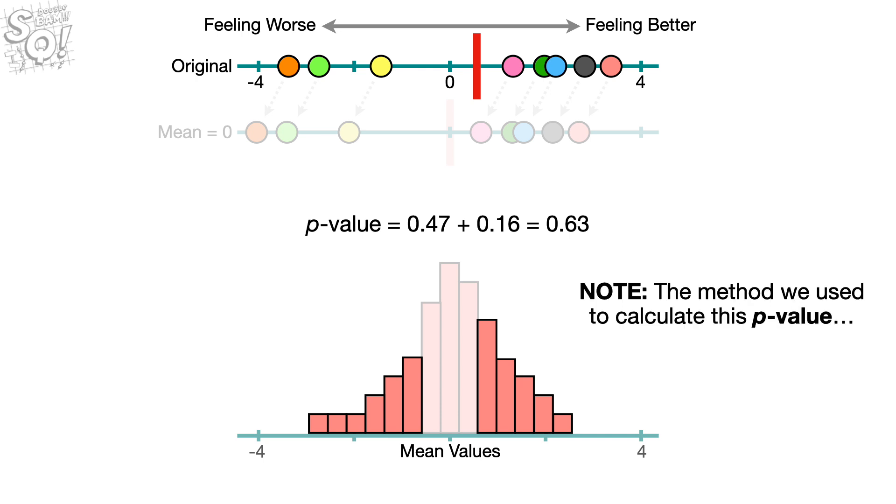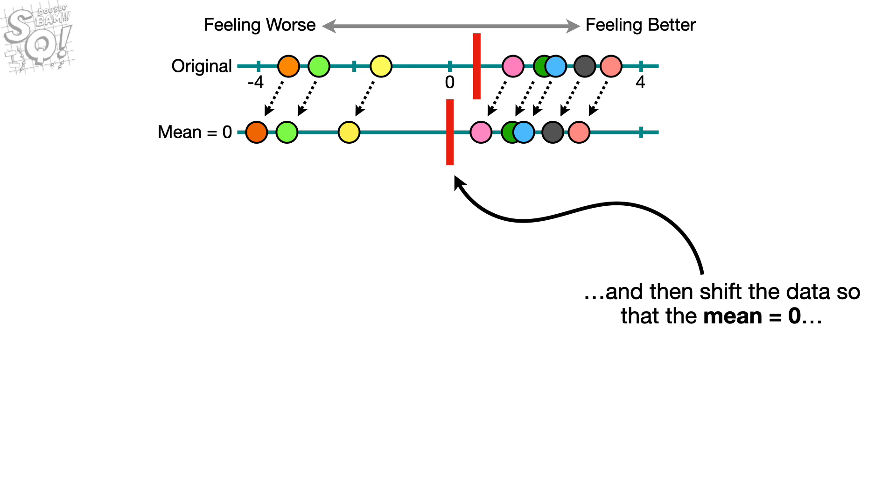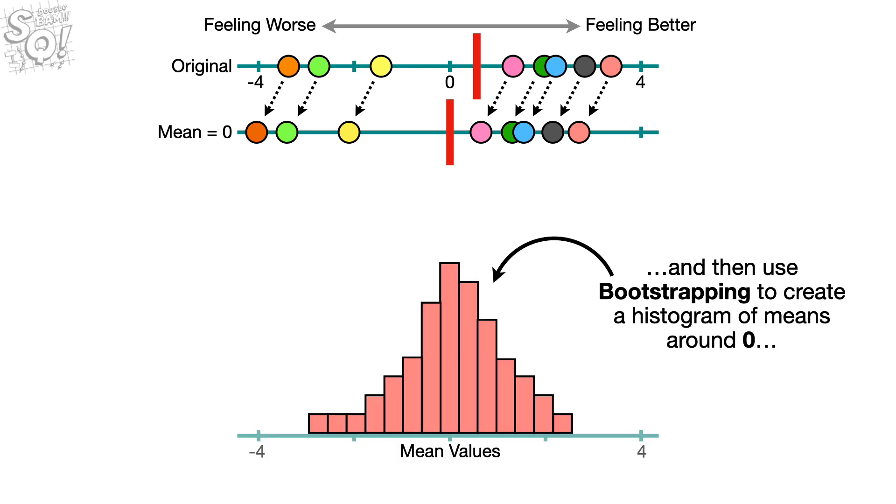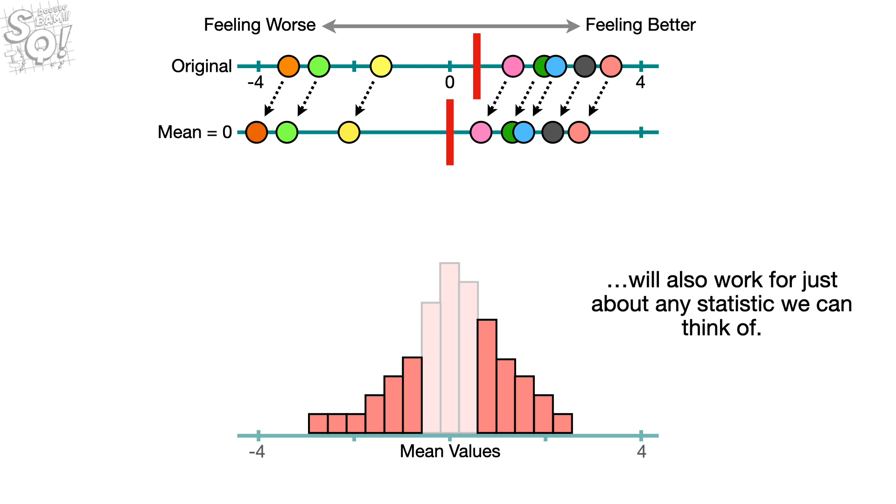Note, the method we use to calculate this p-value, start with raw data, calculate the mean, and then shift the data so that the mean equals 0, and then use bootstrapping to create a histogram of means around 0, and then use that histogram to test the hypothesis that the drug made 0 difference, will work for just about any statistic we can think of.